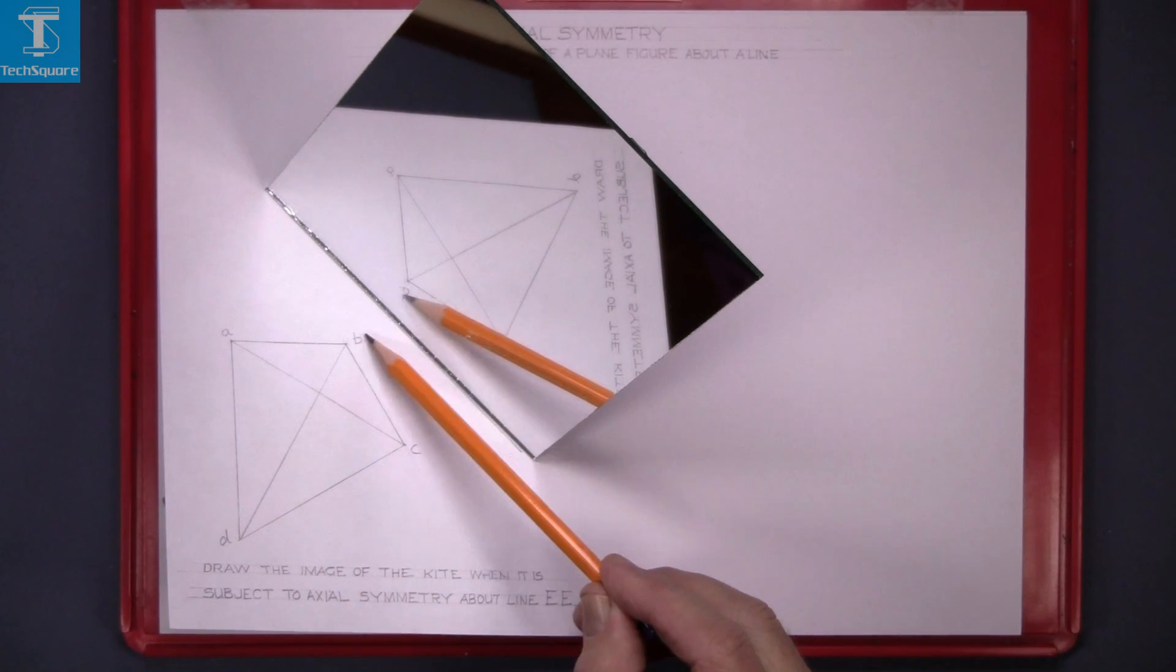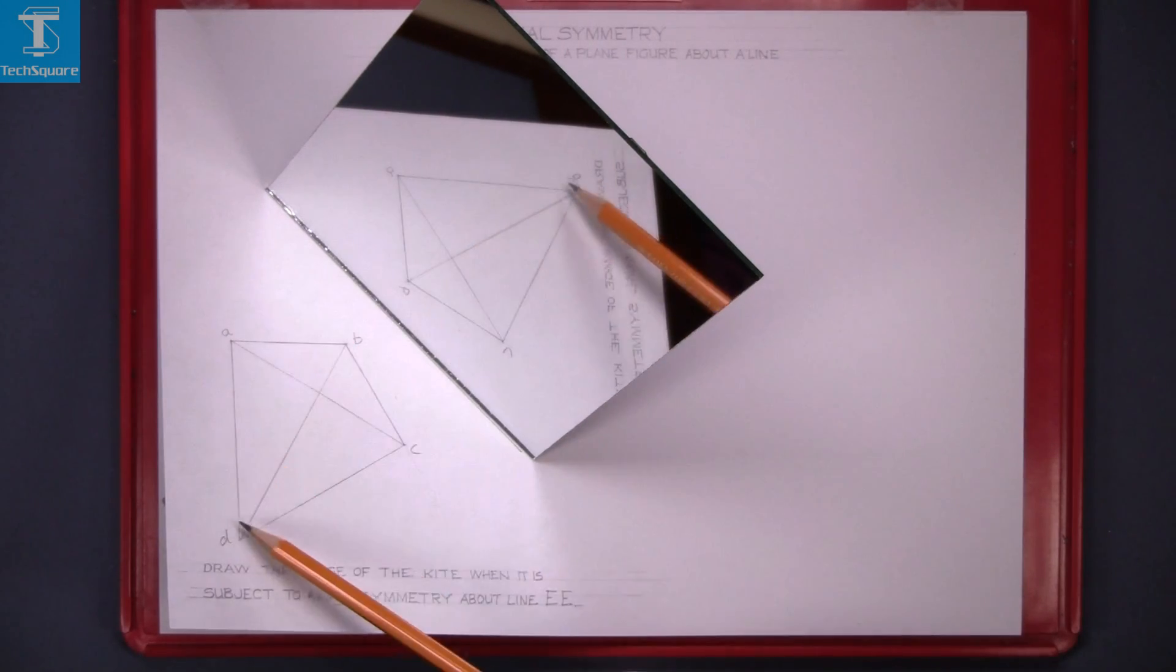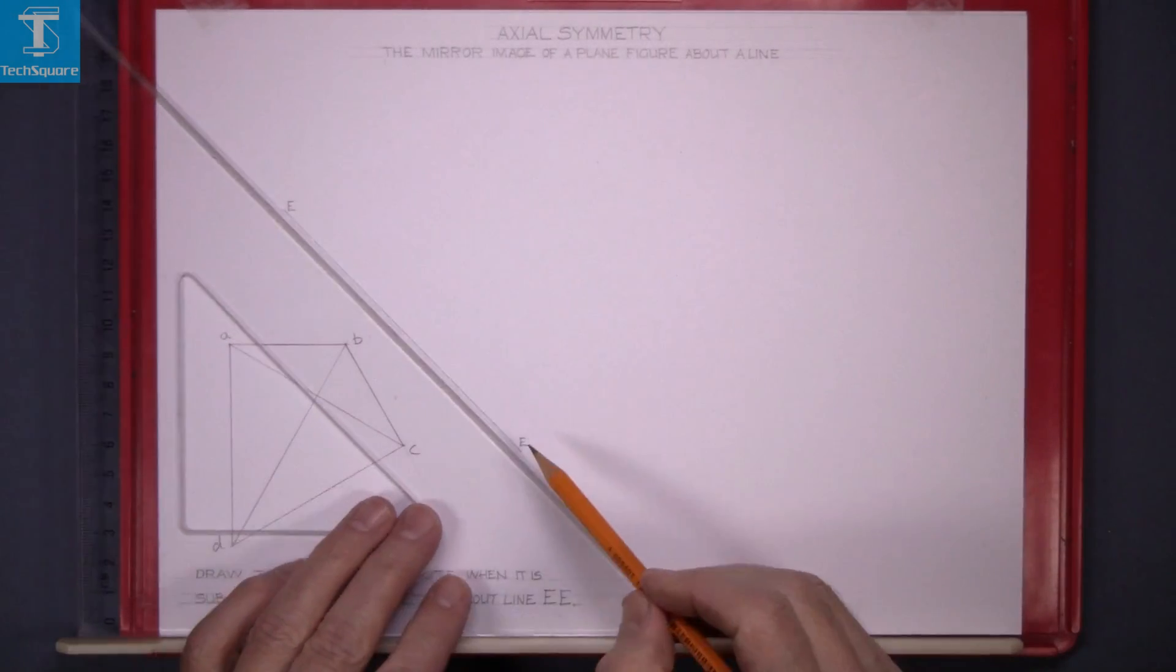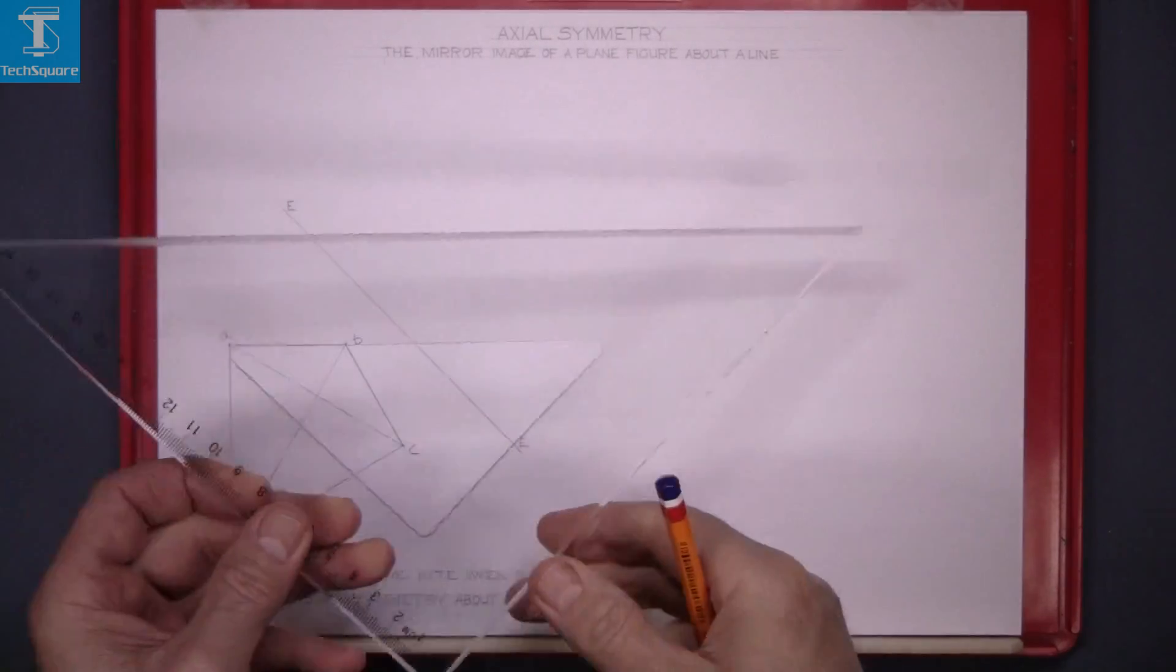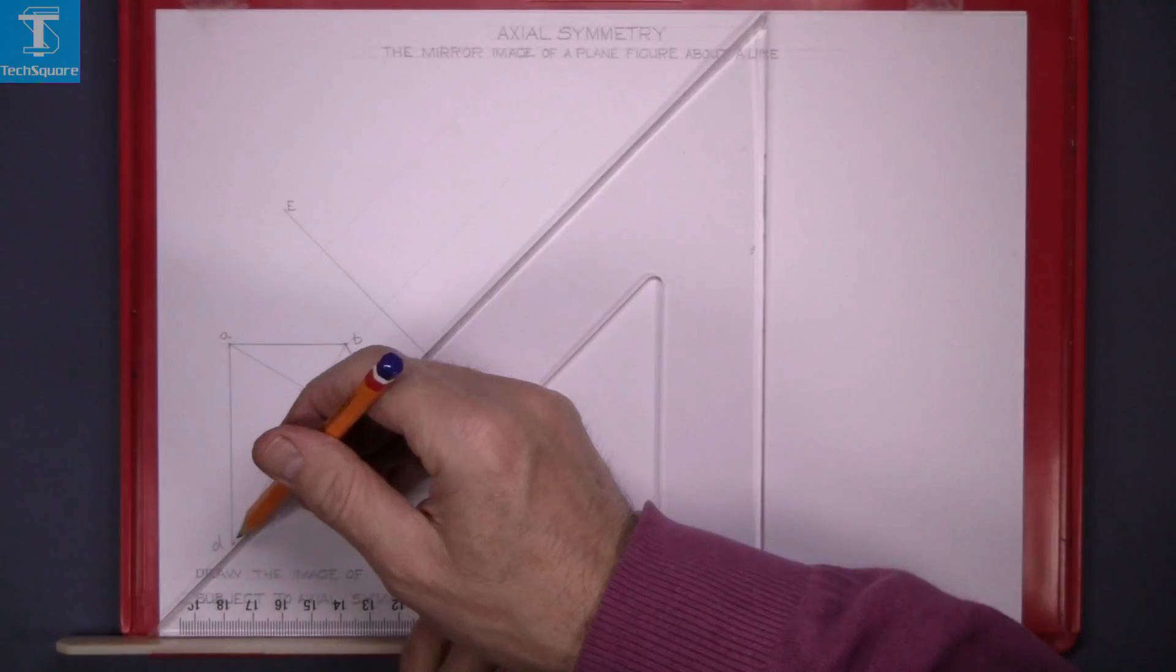Point B will move at 90 degrees to the line. C will move and A the same. All the points move at 90 degrees to the line. So we have a line of 45 degrees, so we draw from each point at 90 degrees to the line.